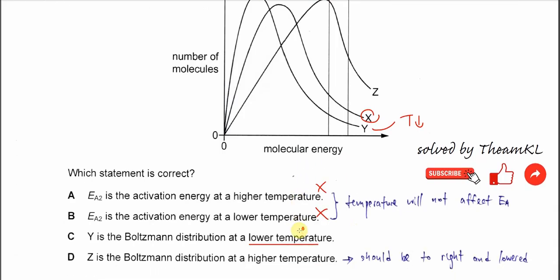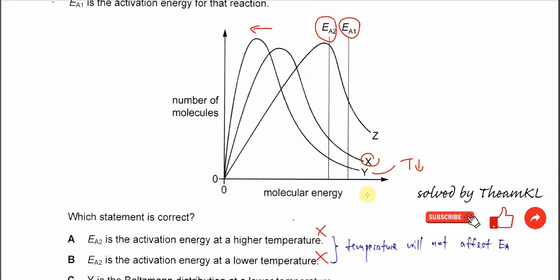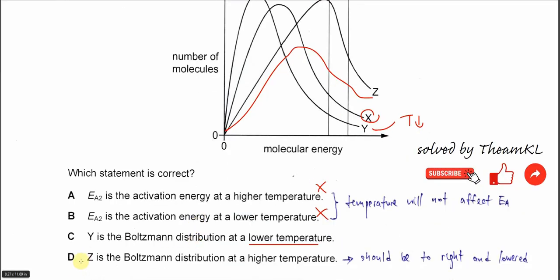For D, Z is described as a Boltzmann distribution at higher temperature — this is not correct. Higher temperature means the curve will shift to the right and be lower. So D cannot be the answer, A cannot be the answer, B cannot be the answer. Therefore, the answer is C.